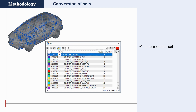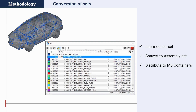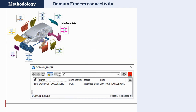Still in the area of smart assembly, it is now possible to convert an existing set that contains entities from different model browser containers into an assembly set and distribute all generated entities to the proper model browser containers. This is possible through the respective context menu option from the sets list, which generates a domain finder entity that collects intermodular set contents and places them into the assembly set. Speaking of domain finders, ANSA now supports the definition of simulation models, load cases, and simulation runs as the connectivity of a domain finder.